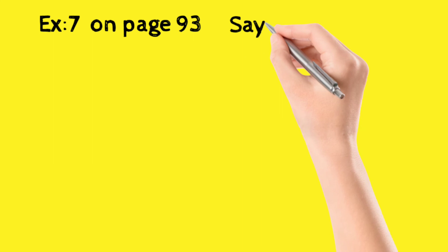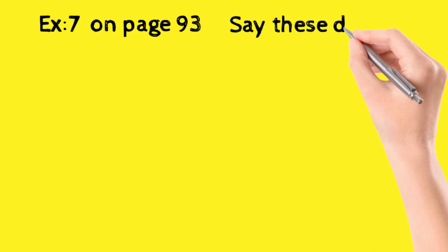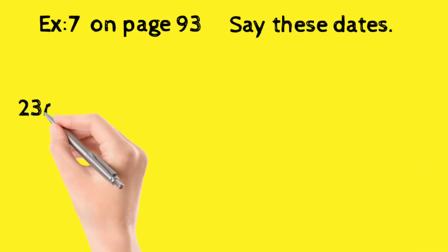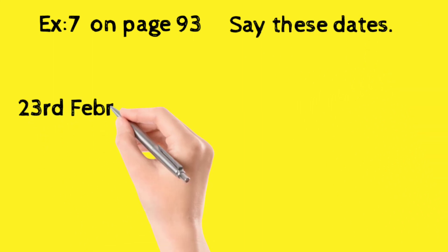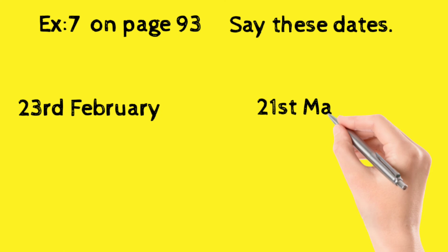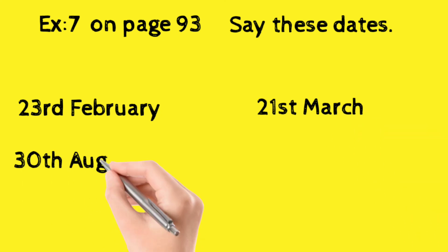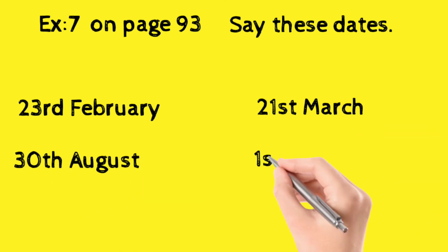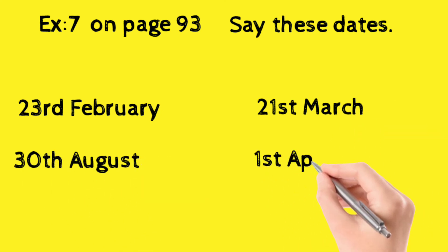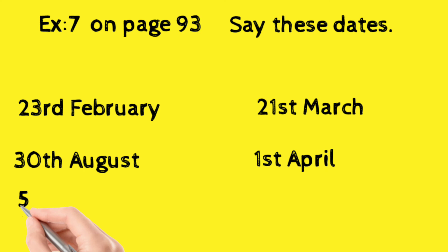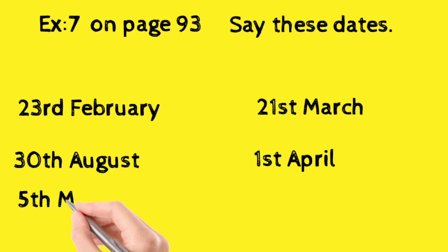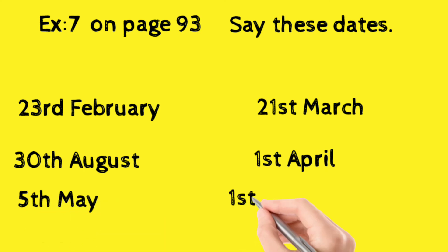Do exercise seven on page 93. Say these dates. Балдар, 7-чі көнігін іштейбіз. 93-чі беттачауыз. Гүндөрді атайбыз.